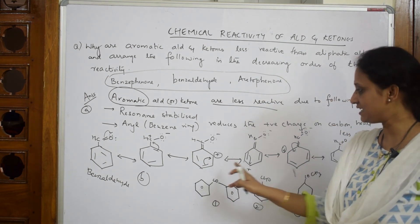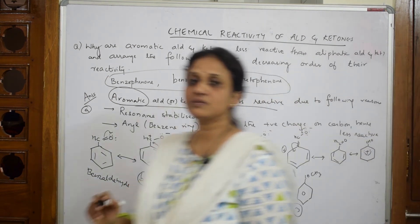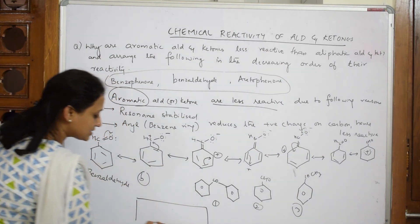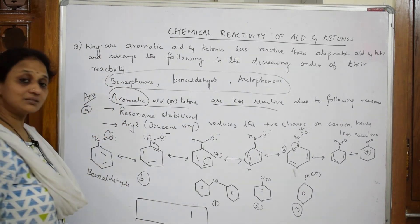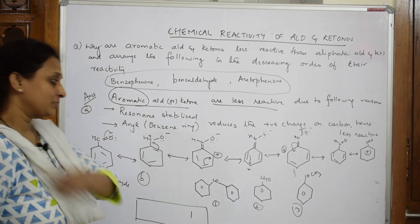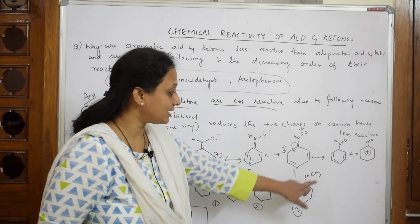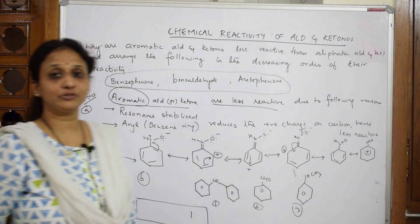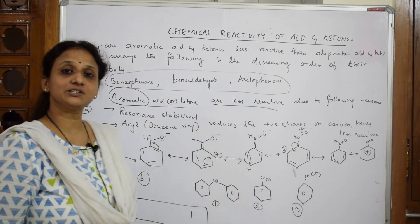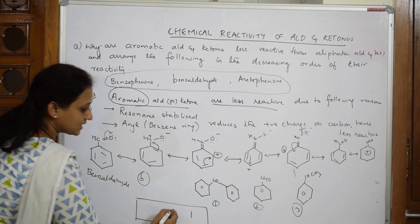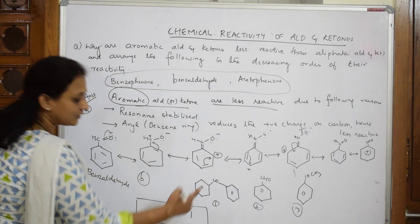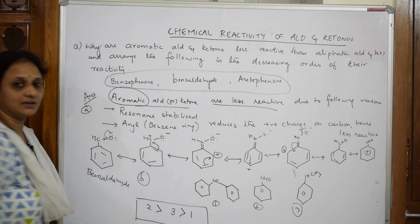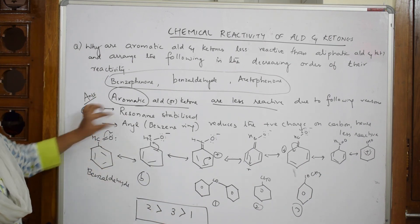Acetophenone has an alkyl group — please remember alkyl and aryl — it's an electron-releasing group. So next comes your 3 (acetophenone). Then the highest reactivity is 2 (benzaldehyde). So the final order is: 2 greater than 3 greater than 1, i.e., benzaldehyde > acetophenone > benzophenone. Based on this concept, please note the answer.